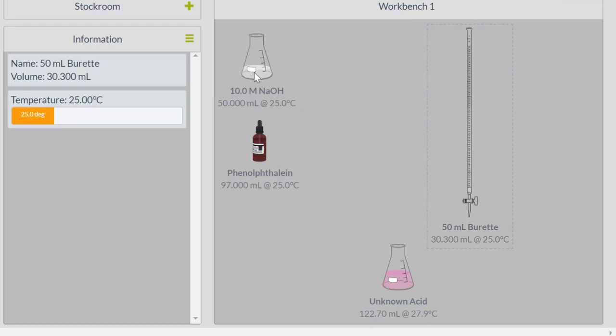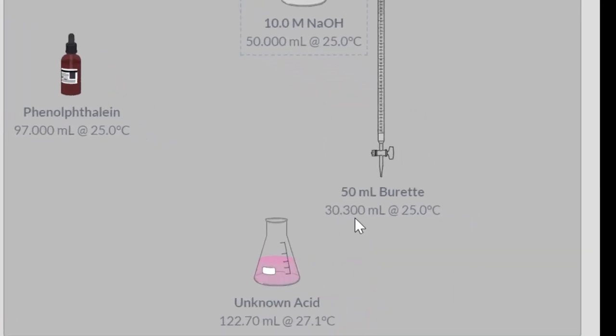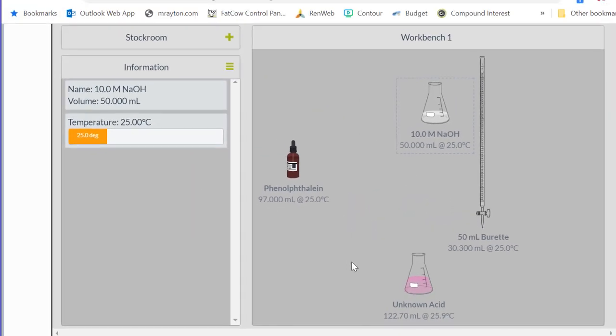You can see my 10.0 molar. I started at 50.0 milliliters, and it has gone all the way down to 30.3 milliliters. Which means you can find your change of volume of your 10 molar. I have hit my end point of my 100 milliliters of my unknown concentration. So your job is to find out the unknown concentration of your acid from your titration.